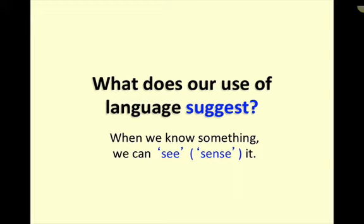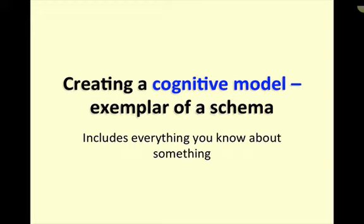What we're actually doing is we're trying to create a cognitive model. Here's another fancy word: an exemplar of a schema. So you have a schema, say, about a chair. A chair has a back, something to sit on, and four legs — that's your template. That's what a schema is, like a template. Well, you have all sorts of examples of chairs — a Victorian chair, some other kind of chair, etc. So those are exemplars, and when you communicate, you're trying to create a very specific example of a schema, a cognitive model, which includes everything you know about something.